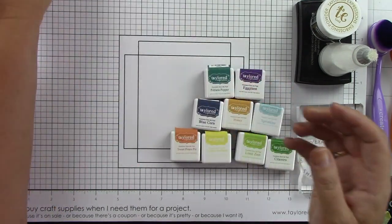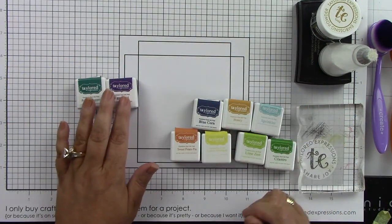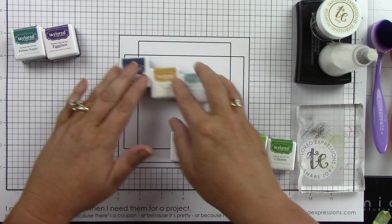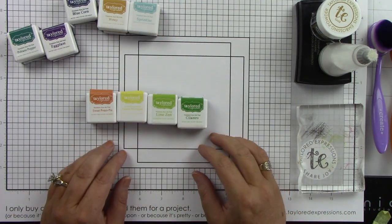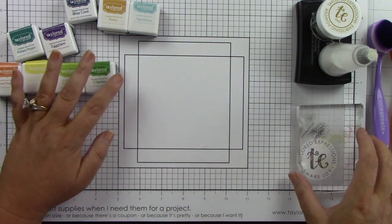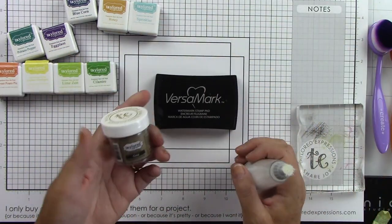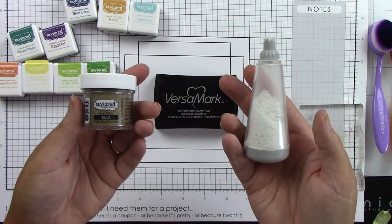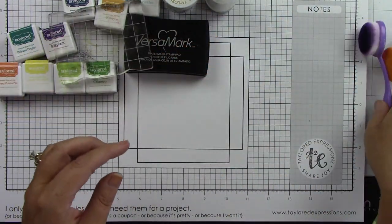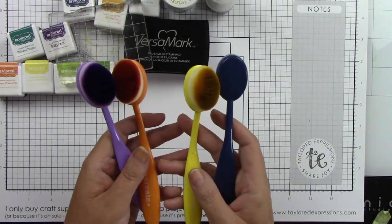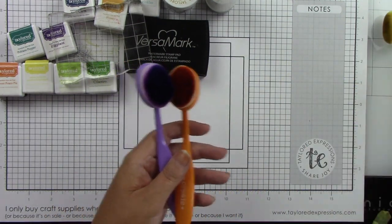I'll be using 3D Foam Squares, Oreo ink, Poblano Pepper and Eggplant, Blue Corn, Honey and Sprinkles ink, Sweet Potato Pie, Lemon Meringue, Lime Zest and Cilantro. I'm going to be doing some embossing, so I need gold embossing powder, my Powder Tool, Versamark, an acrylic block, my blending brushes, Vellum, and Oreo and Sugar Cube cardstock.